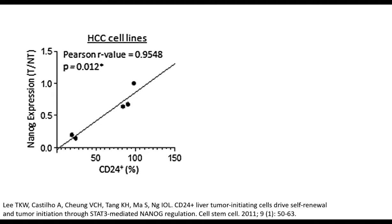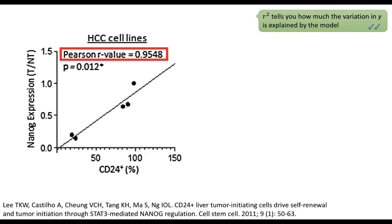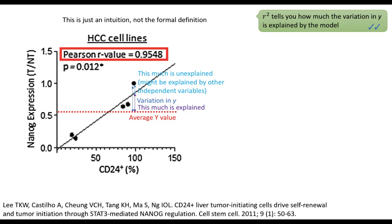As a science student, one day you may be reading an article on a beach and you see the r-value. Without telling you what r-value is, I will jump over to r-square value. Basically, r-square tells you how much variation in y is explained by the model. To give you an intuition: this is the average y-value, and this is the variation of y. This much is explained by the model, and this much is not explained — which might be explained by other independent variables, but not the x-values shown here. You can see r-square as the proportion of variations in y that is explained by the model.